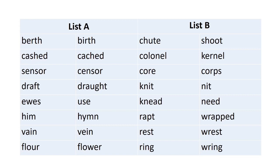More homophones: 'vein' and 'vain.' 'Flower' and 'flour.' 'Shoot' and 'chute.' 'Kernel' and 'colonel.' 'Core' and 'corps.' 'Net' and 'knit.' 'Need' and 'knead.' 'Wrapped' and 'rapt.' 'Rest' and 'wrest.' 'Ring' and 'wring.'